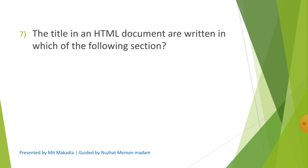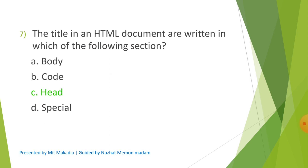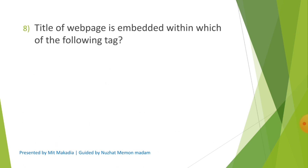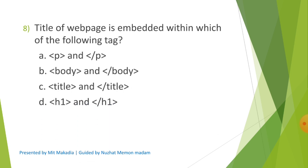Question 7: The title in an HTML document is written in which of the following sections? Options are A) Body, B) Code, C) Head, D) Special. The correct answer is C) Head. Question 8: The title of a web page is embedded within which of the following tags? Options are A) P tag, B) Body tag, C) Title tag, D) H1 tag. The correct answer is C) Title tag.